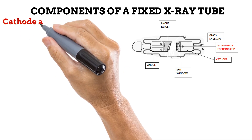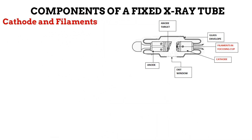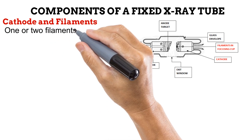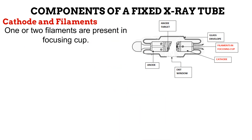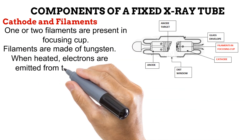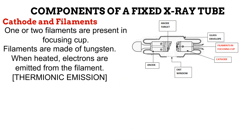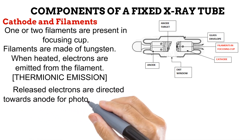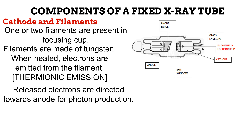The next components of the fixed tube are the cathode and the filaments. The cathode is the negative side of the X-ray tube. It contains one or two filaments placed in a structure known as a focusing cup. These filaments are made of the material tungsten. When heat is applied to the filament, it releases electrons. This process is known as thermionic emission. It is these electrons that are sent to the anode for production of X-ray photons.